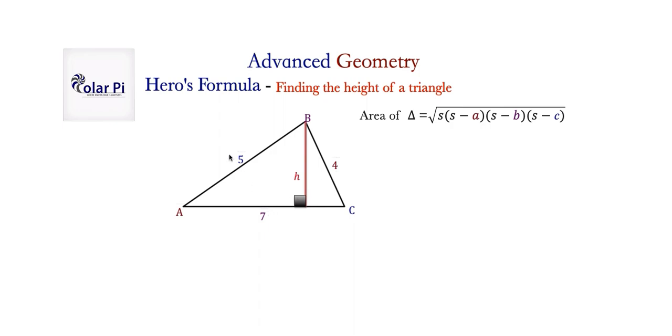A here, B here, and C here. And S is the semi-perimeter. And as the name says, S is half of the perimeter.